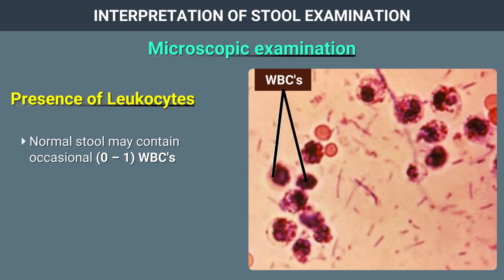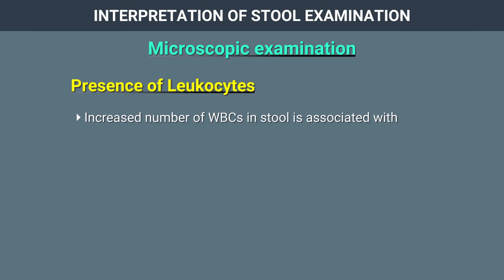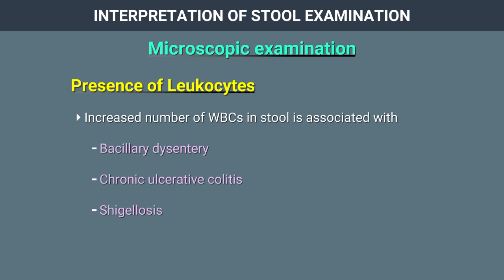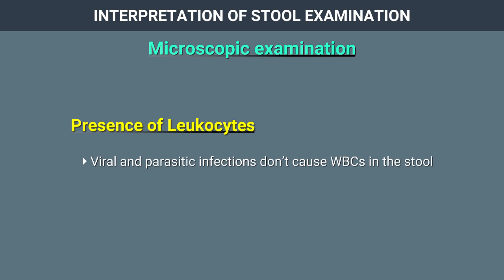Presence of leucocytes: normal stool may contain occasional white blood cells. To look for white blood cells, the smear must be prepared from the area of mucus or from watery stool. Increased number of white blood cells in stool is associated with bacillary dysentery, chronic ulcerative colitis, shigellosis, salmonella infection, E. coli diarrhoea, fistula of anus or rectum, localized abscess, and sometimes with amoebiasis and typhoid. Viral and parasitic infections do not cause white blood cells in the stool.